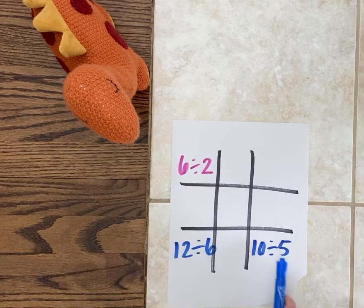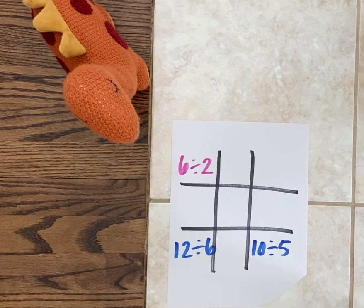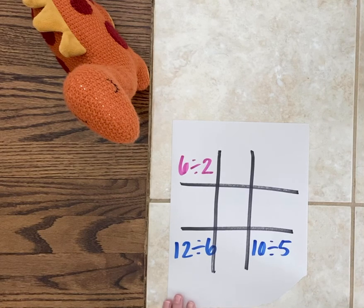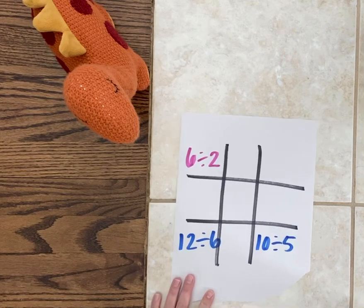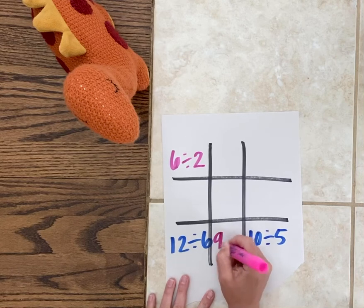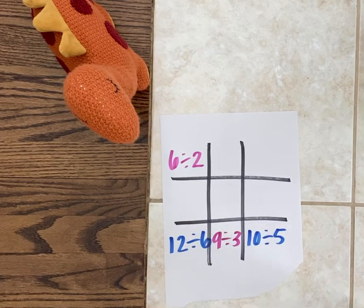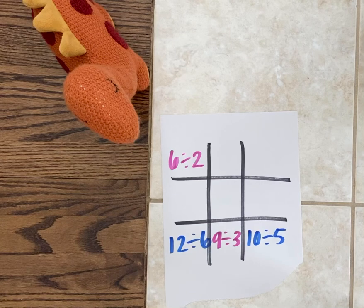So far I have two spots where I have a quotient or answer of two. Now dinosaur is going to try to block me right here, going for a quotient of three. She knows nine divided by three is three, because she knows three times three is nine. If we flip that fact and think about nine in three groups, there will be three in each group.